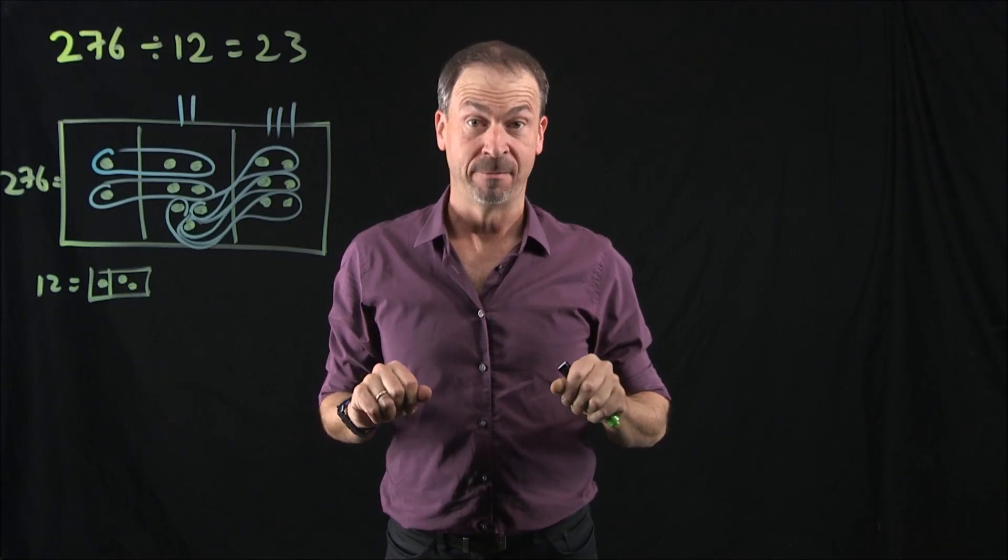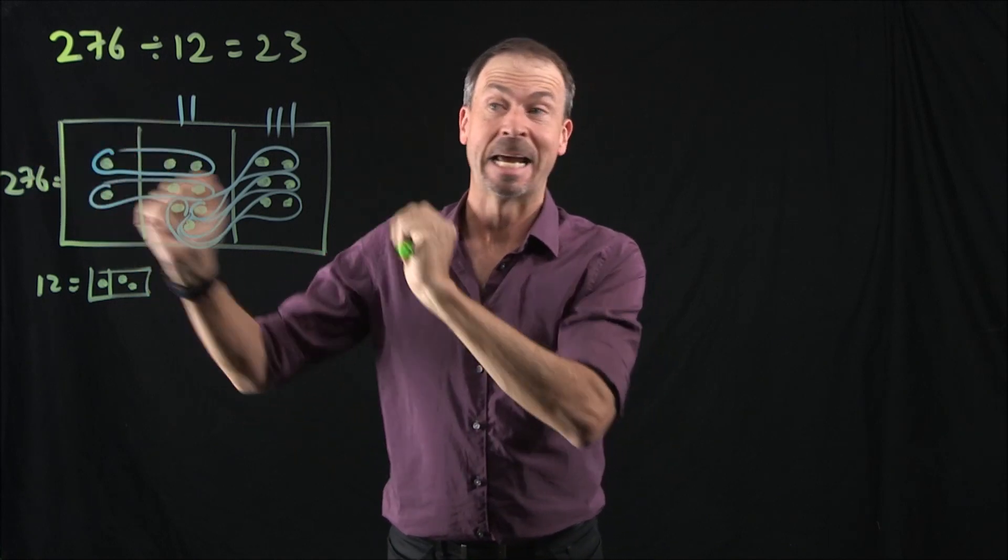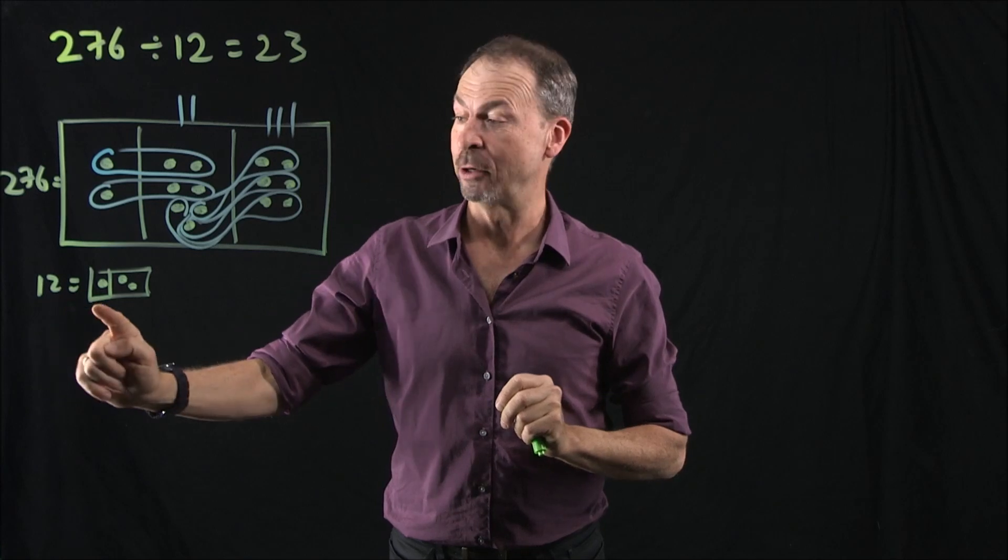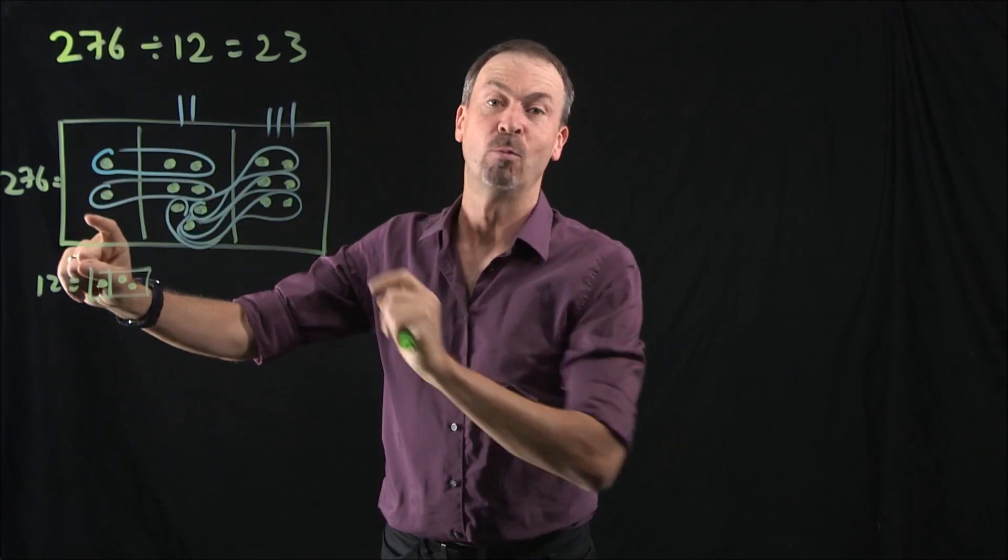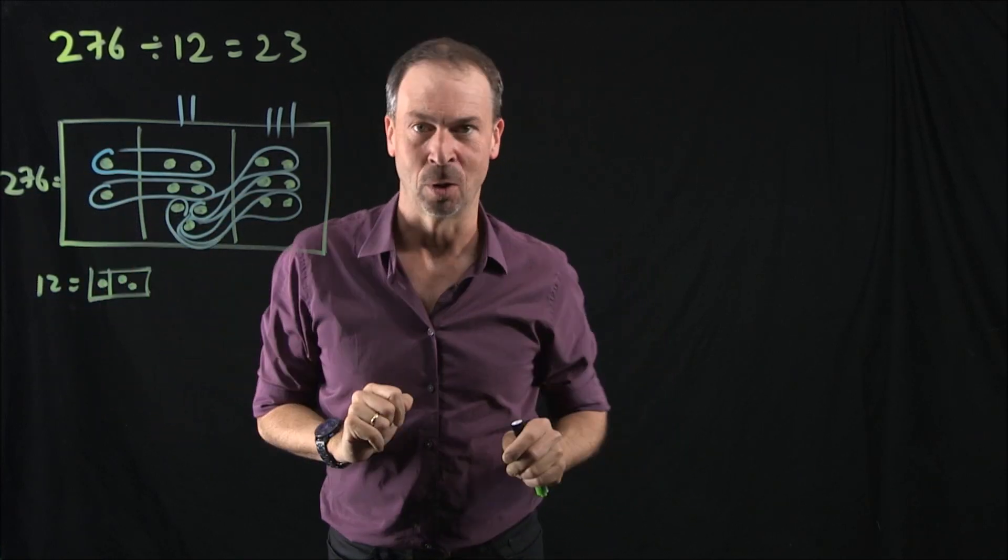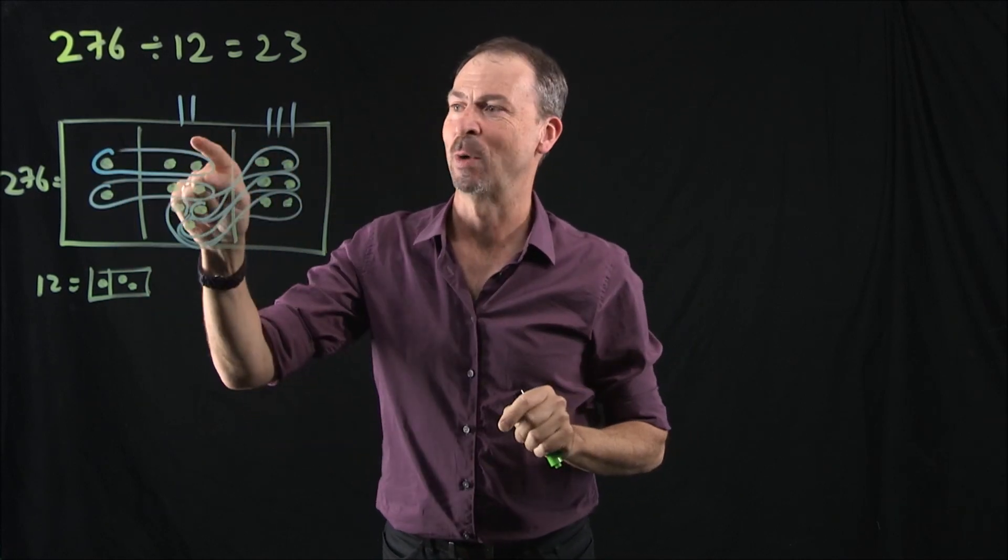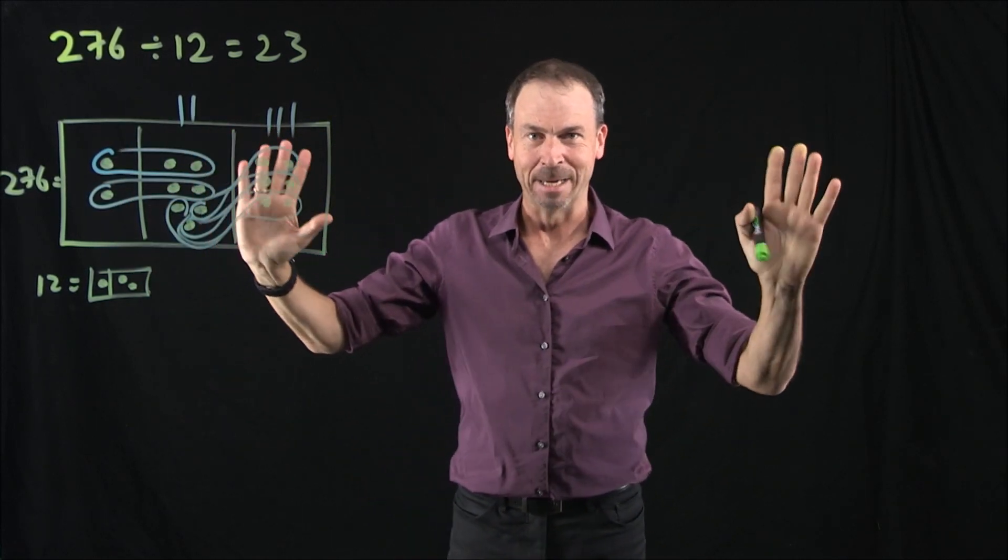Okay, let's go back and revisit division. Here's a division problem in a 10-1 machine. 276 divided by 12 is 23. 12 looks like one dot next to two dots. We found lots of one dots next to two dots in a picture of 276. In fact, we saw two at the tens level and three at the ones level, 23.